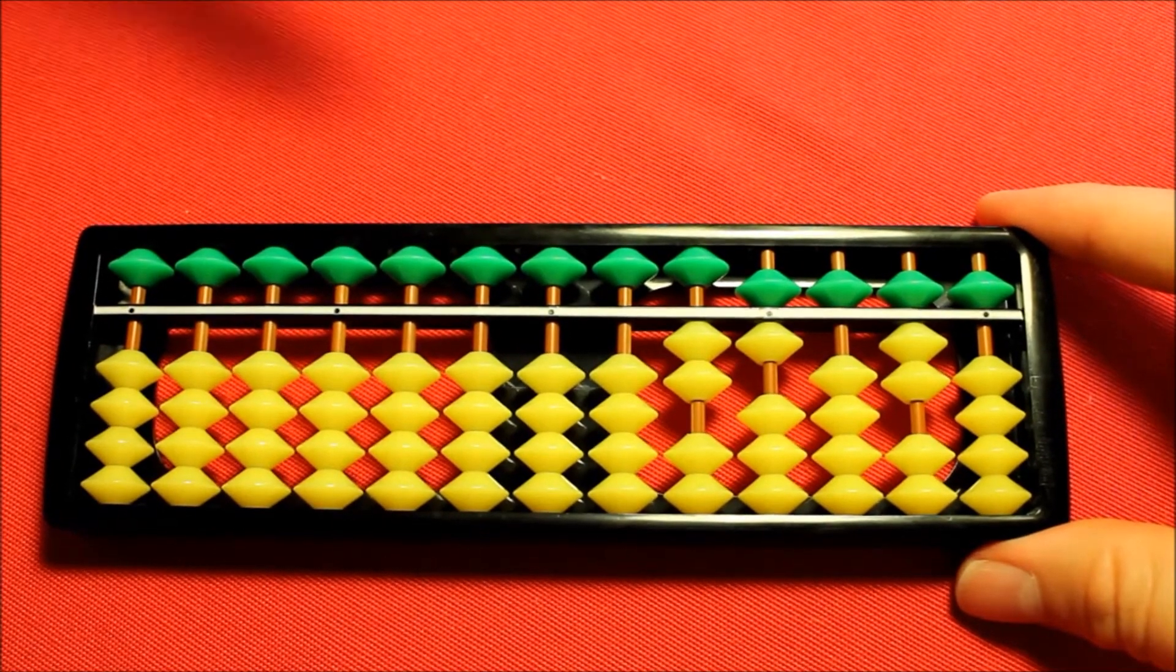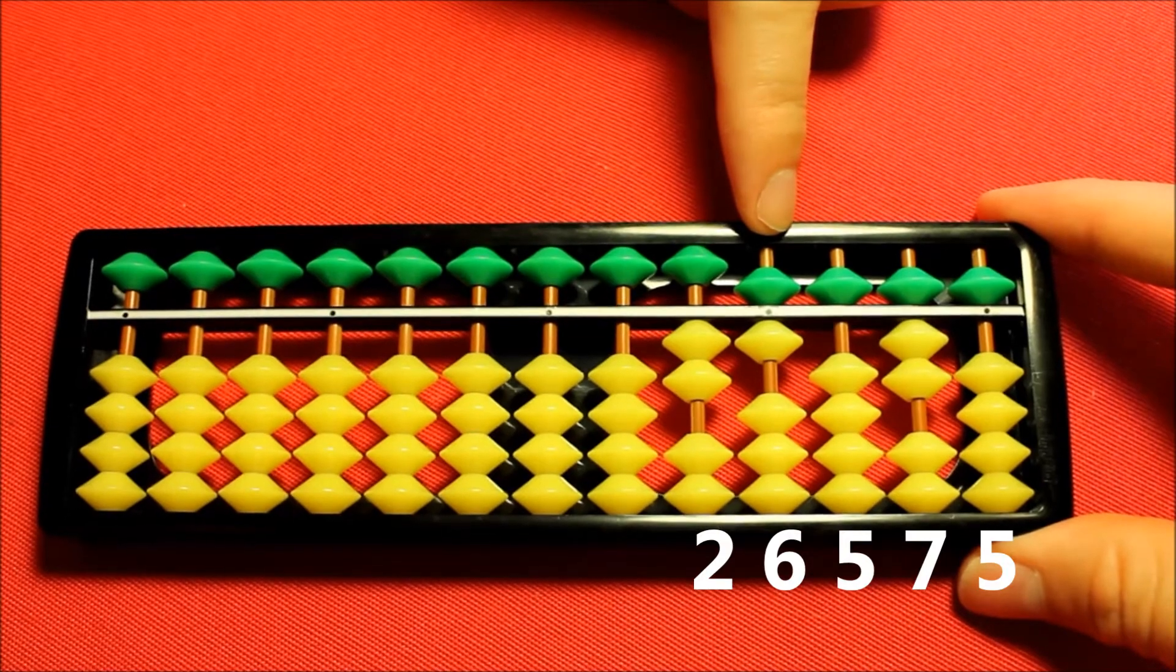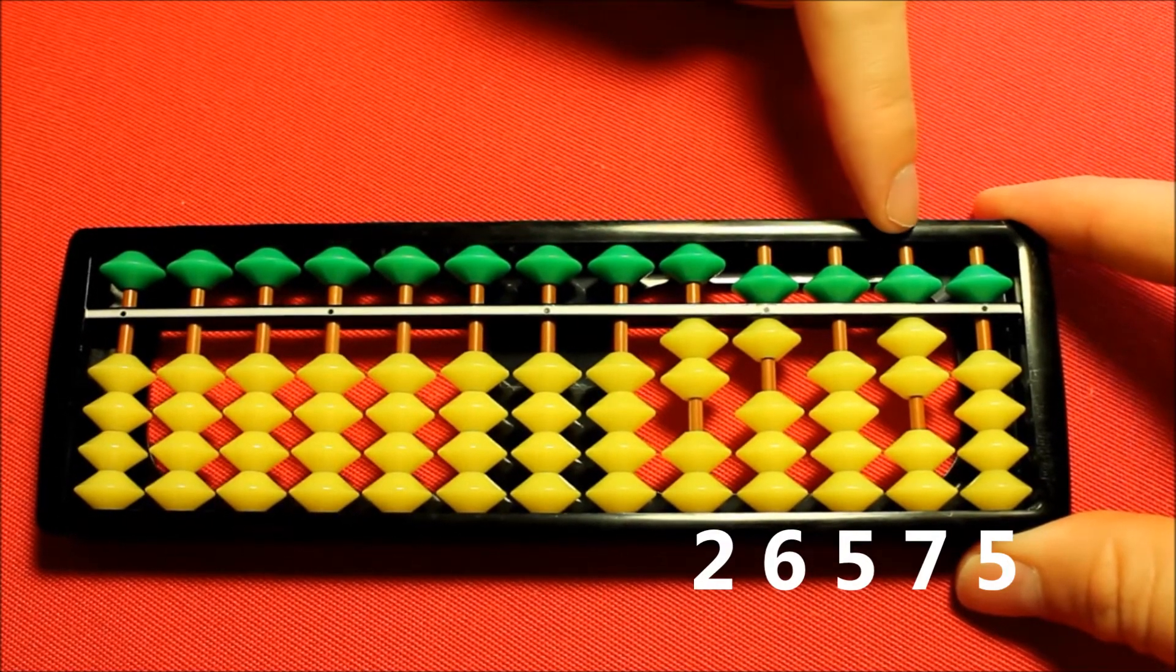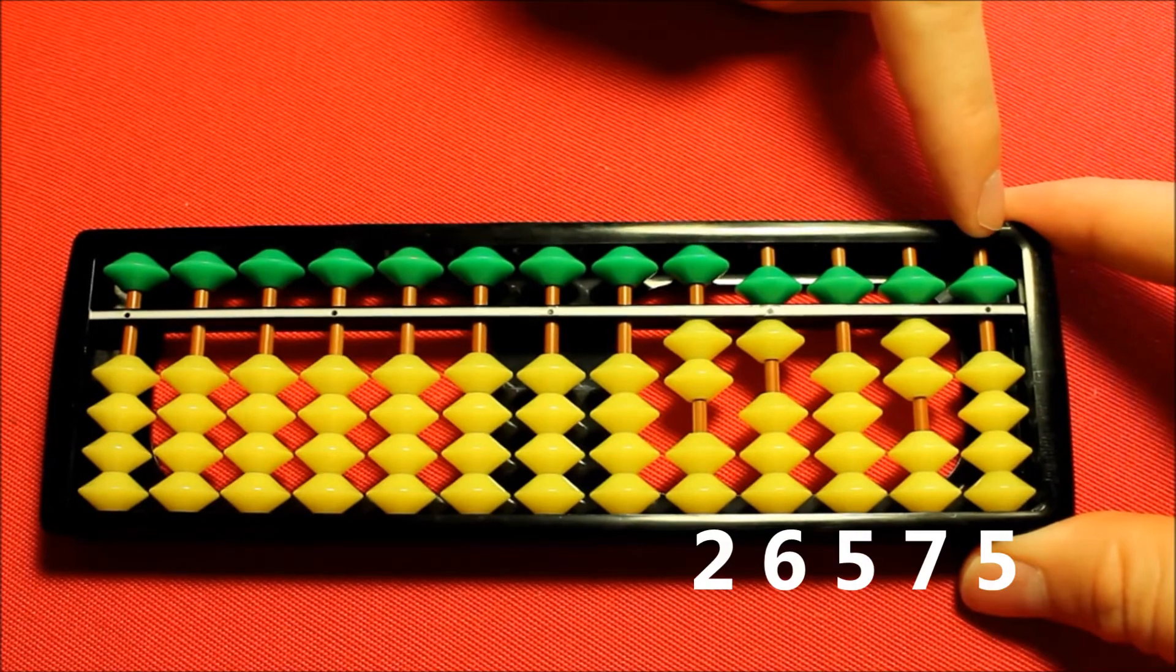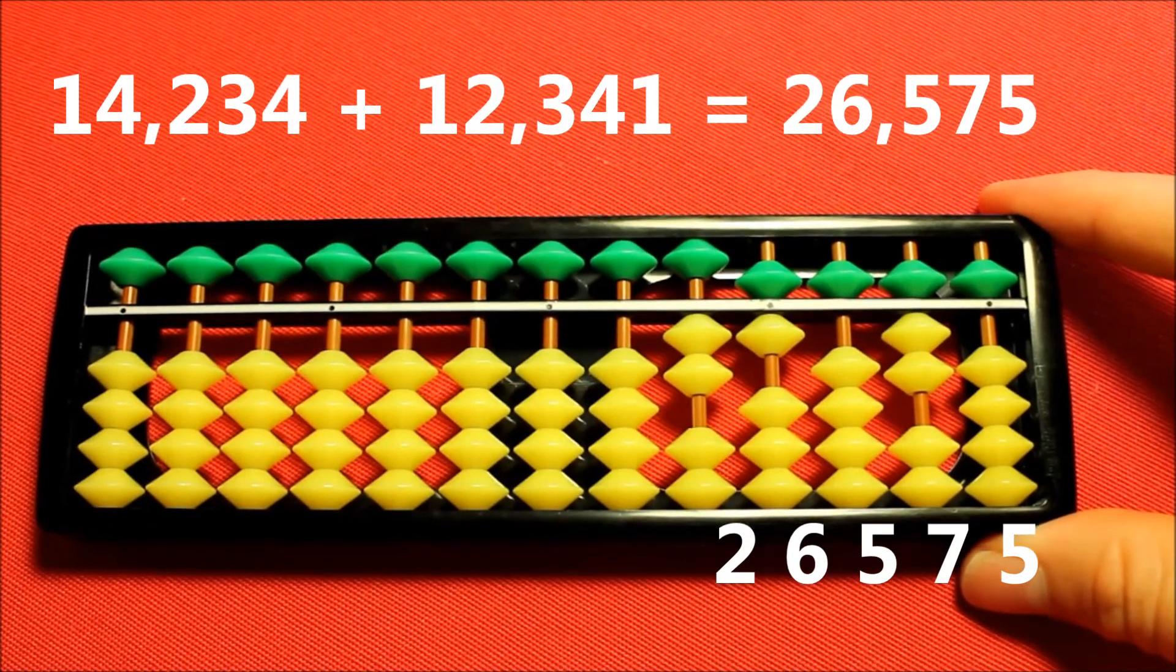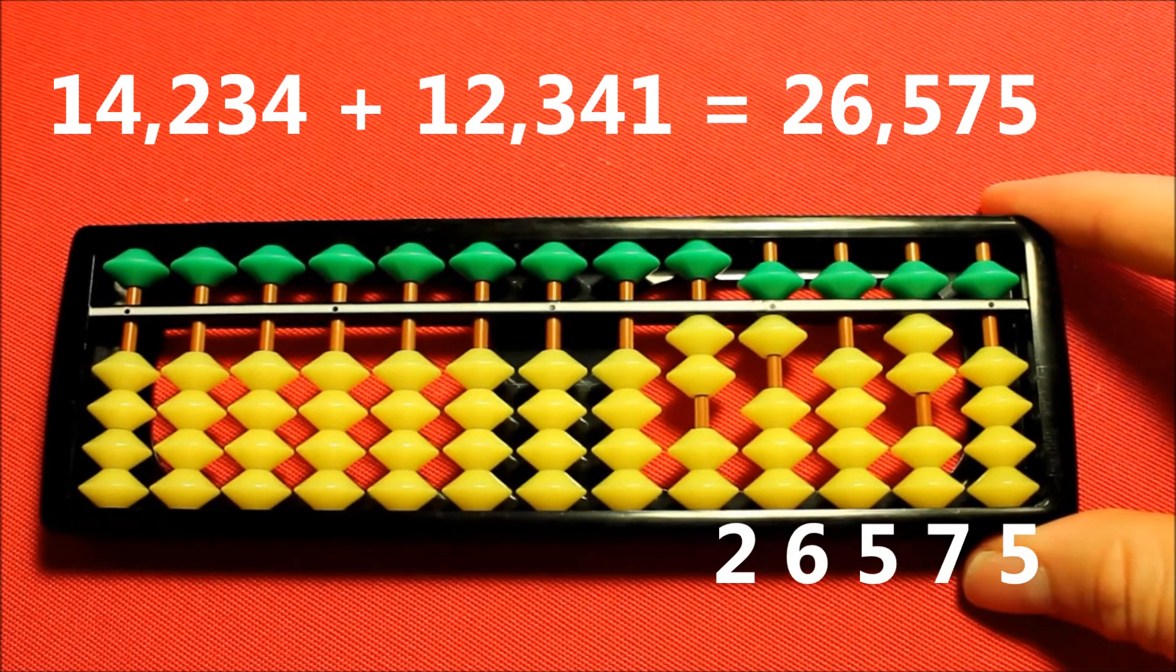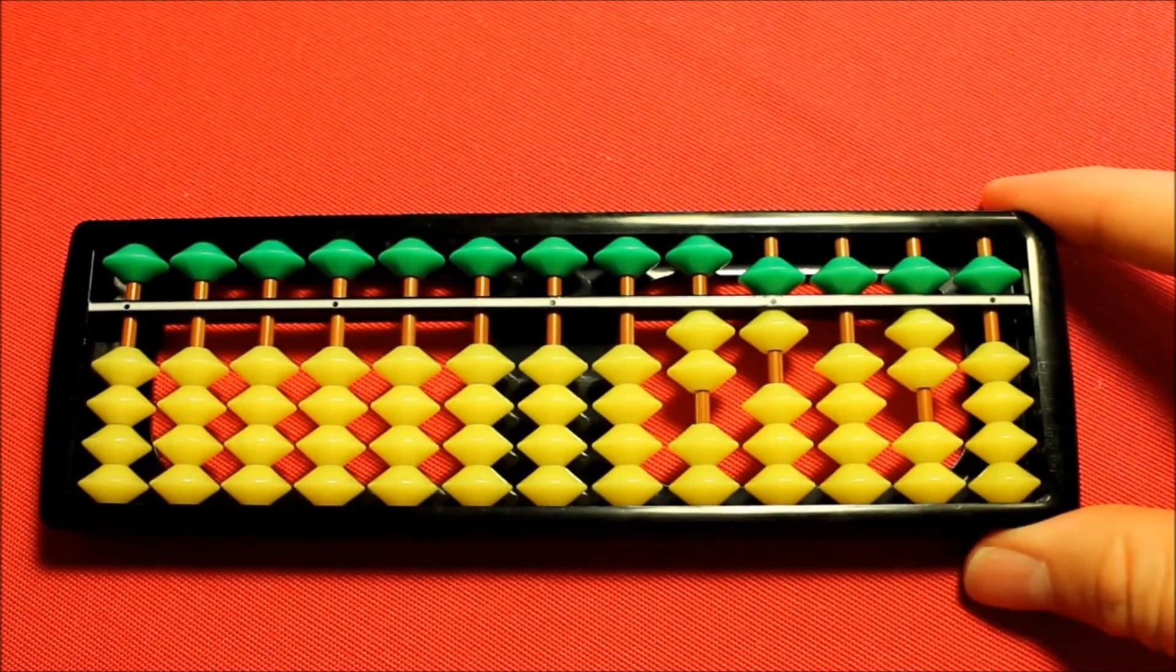What have we got left? Two in this column, six here, five here, five and two that's seven there and five there. 14,234 plus 12,341 equals 26,575. See, I told you it wouldn't be hard.